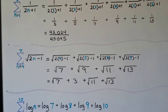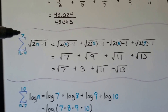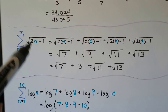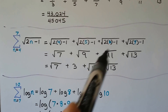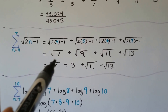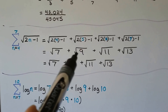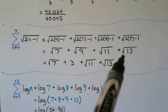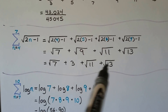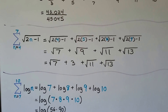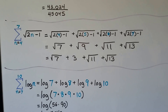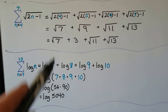We can even do it with radicals. We're going to have 7 terms starting with n equals 4. Our general term is the square root of 2n minus 1. Substituting 4, 5, 6, 7: 2 times 4 minus 1 is 7, so we have the square root of 7; then square root of 9, square root of 11, square root of 13. Square root of 9 can be written as 3. You can just write it like that.